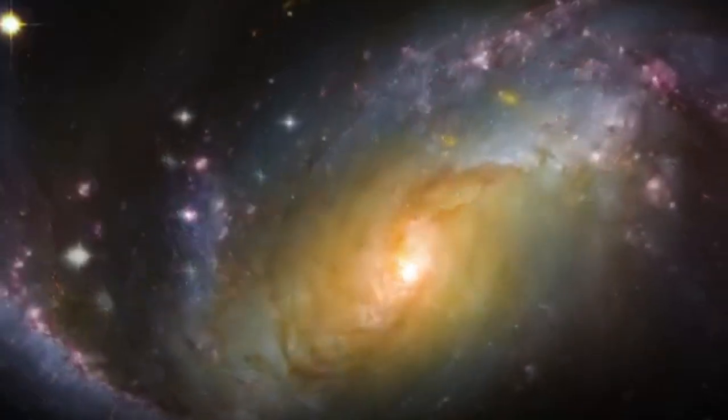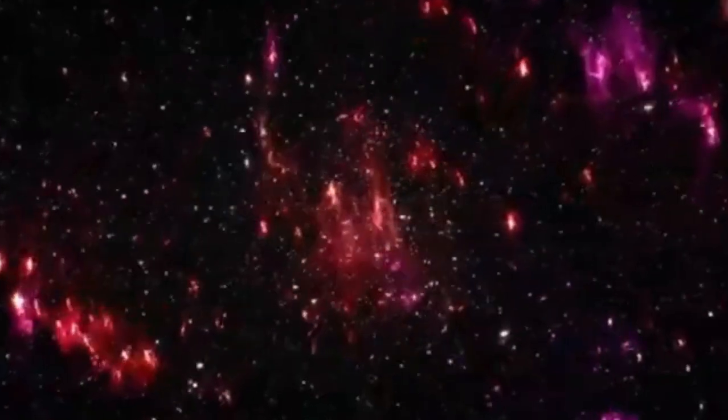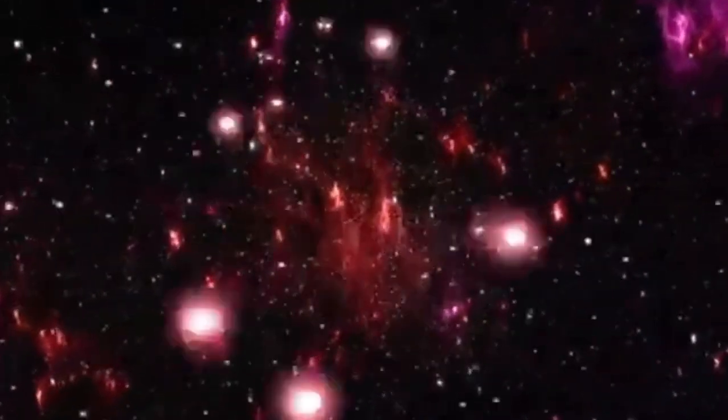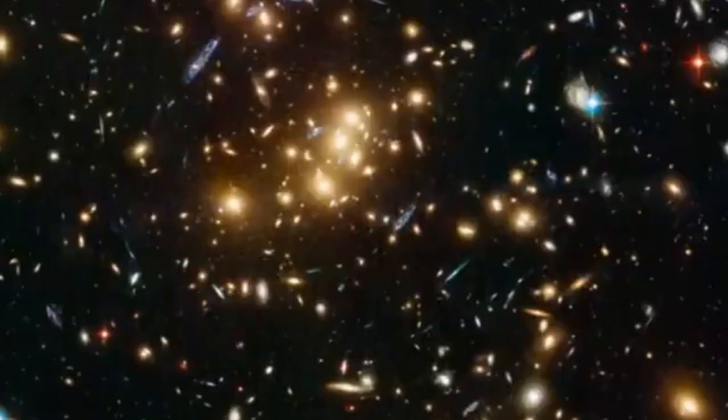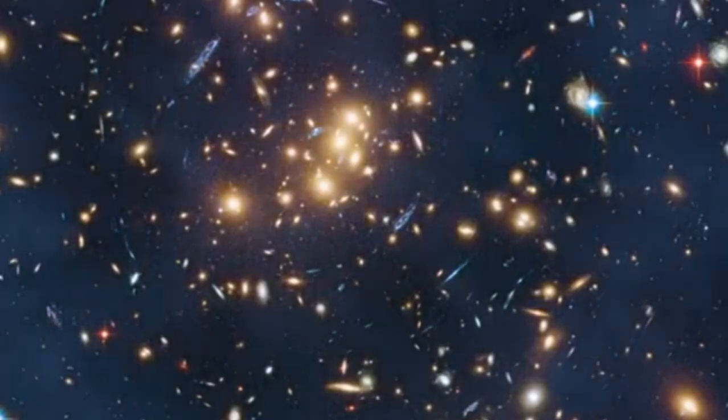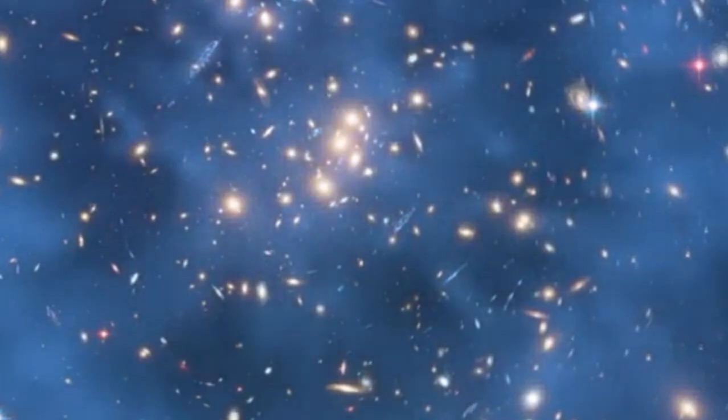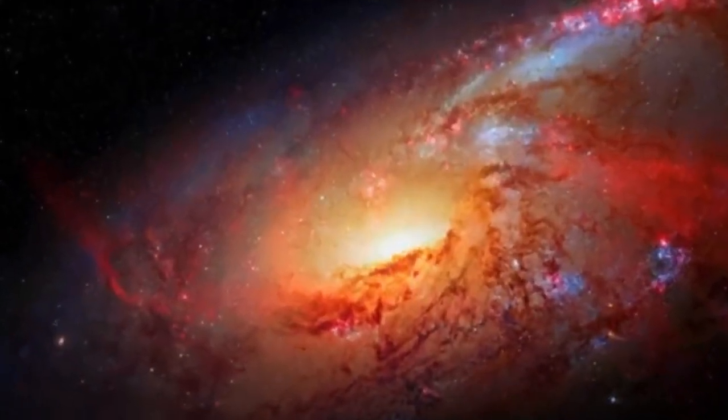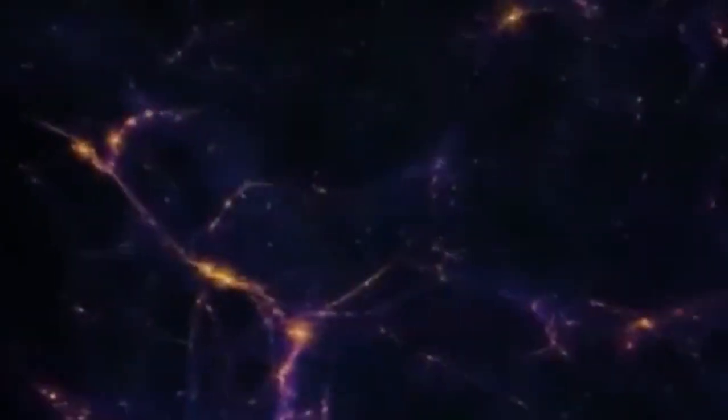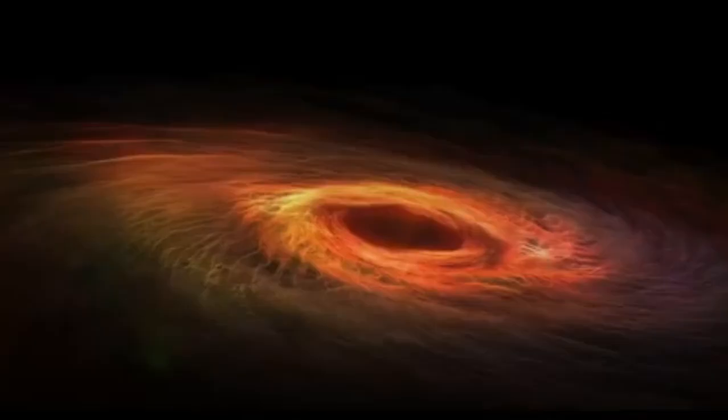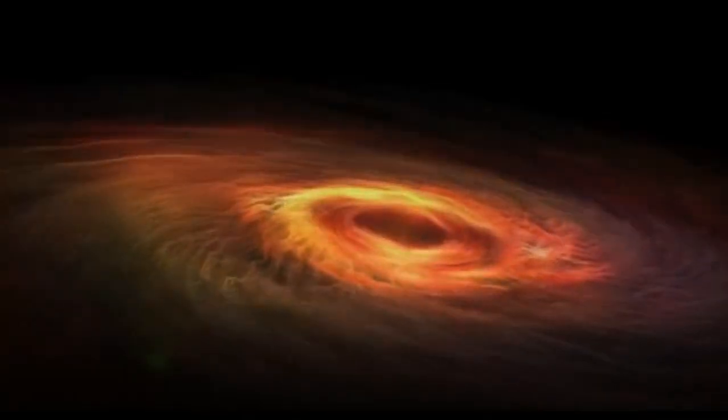The concept of dark flow implies a universe far more complex and interconnected than previously envisioned. It suggests the existence of vast, unseen structures, possibly stretching infinitely, that exert gravitational pulls capable of influencing the movement of galaxy clusters across billions of light-years. These hypothetical structures outside our Hubble volume could vary immensely in form and composition. They might range from colossal accumulations of matter and energy on unimaginable scales to enigmatic fault lines conducting gravitational forces from adjacent or parallel universes. This speculative framework opens doors to contemplating the nature of cosmic connectivity and the potential intersection between our observable universe and realms beyond.